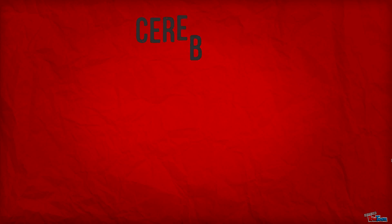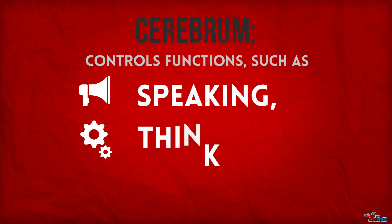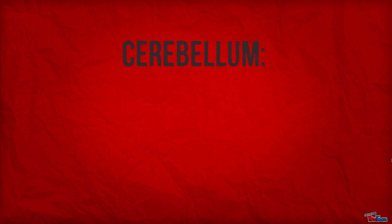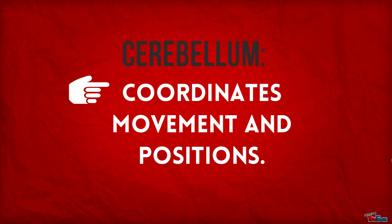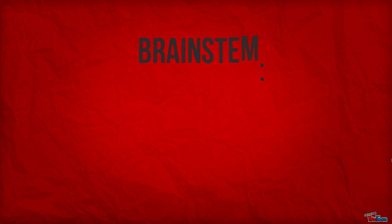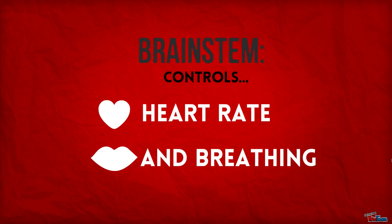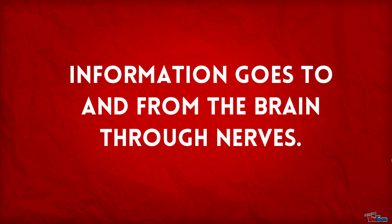The cerebrum controls functions such as speaking, thinking, and seeing. The cerebellum coordinates movements and positions. The brain stem controls heart rate and breathing. Information goes to and from the brain through nerves.